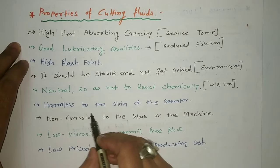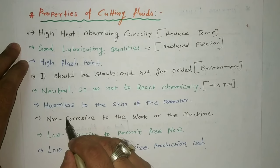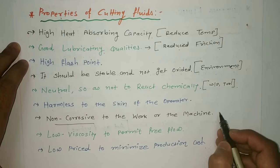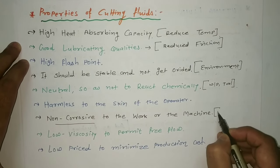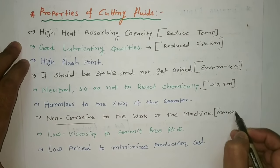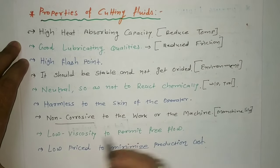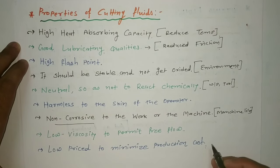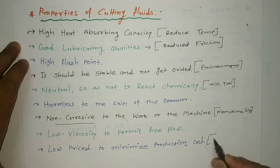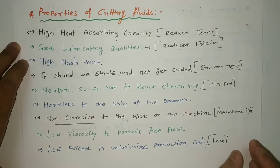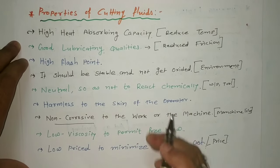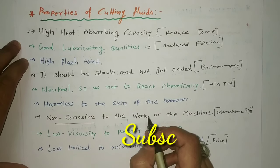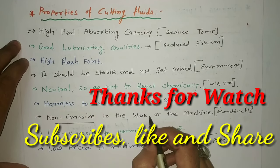Sixth, harmless to the skin of operators — not hazardous. Seventh, non-corrosive to the workpiece or machine, which increases machine life. Eighth, low viscosity to permit free flow. Ninth, low price to minimize production cost. These cover the purpose, types, and properties of cutting fluids. If you like this video, please subscribe and share more mechanical engineering tutorials. Thank you very much.